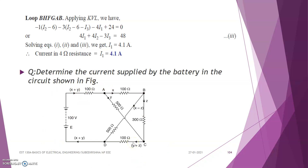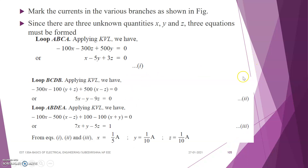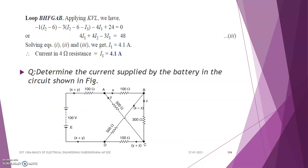After getting the question, we mark the current flowing through each section of the circuit. Next, we analyze the circuit using Kirchhoff's Voltage Law. We use three loops for writing the equations. The first loop is ABCA, which is the triangular section of the circuit.